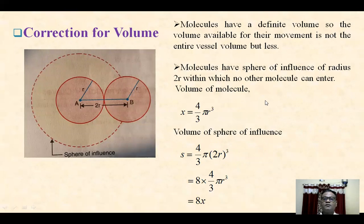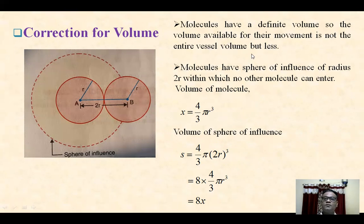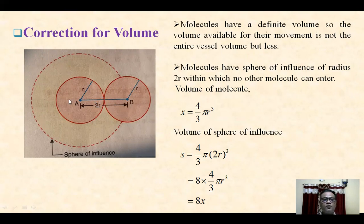Now we will see the correction for volume. Molecules have a definite volume, so the volume available for movement is not the entire vessel volume, but less. If we neglect the volume of molecules, the whole volume of the vessel is available for their movement. But if they have definite volume, then volume available for movement is less. Here in this figure, molecule A and molecule B are shown close to each other. The radius of each molecule is R, so the distance between their two centers is 2R. The dotted circle shown is called the sphere of influence of this molecule, with radius 2R. No other molecule can penetrate within this sphere of influence.